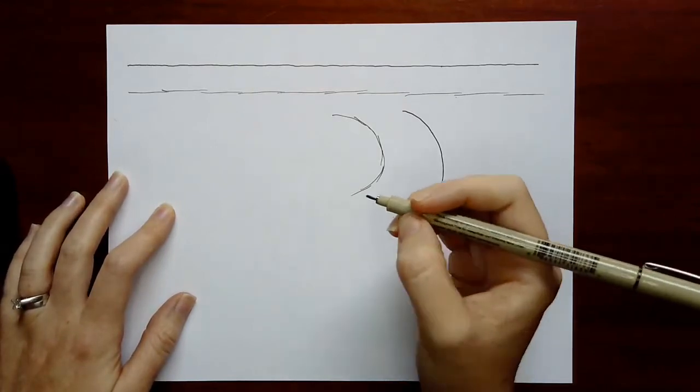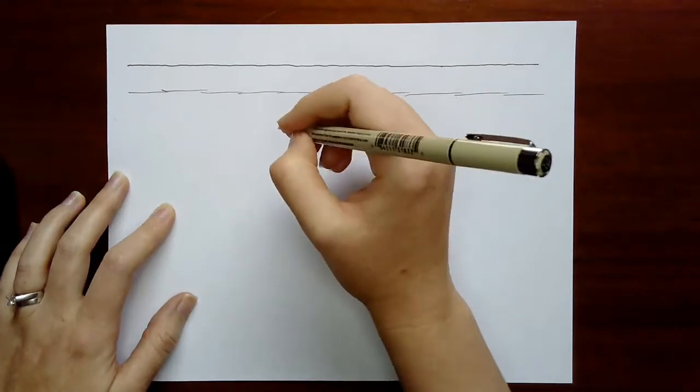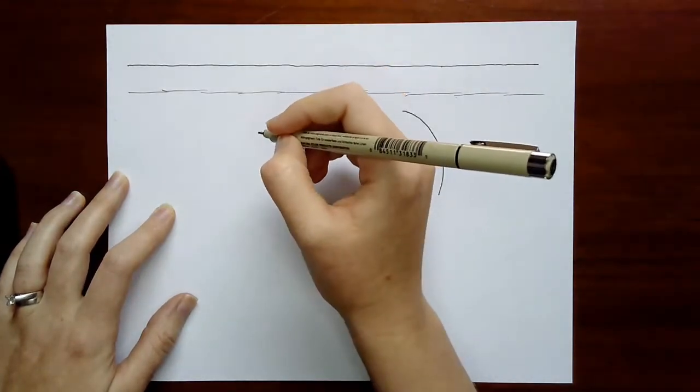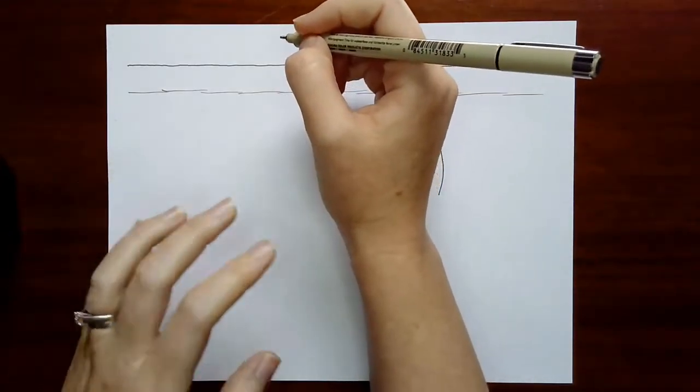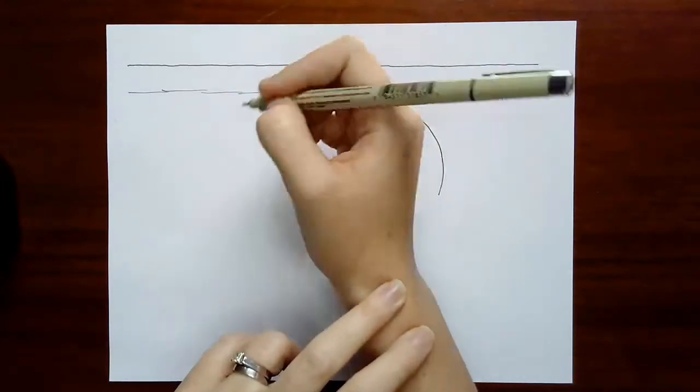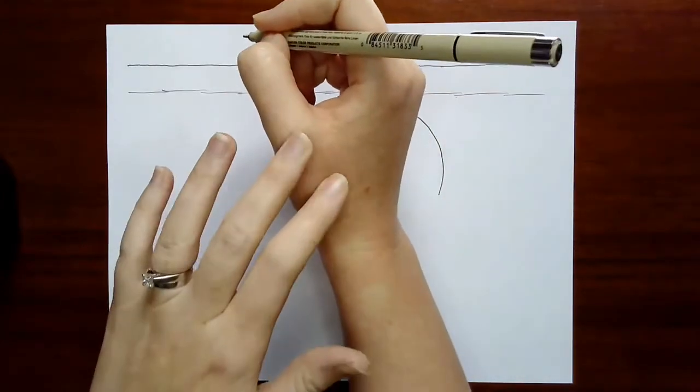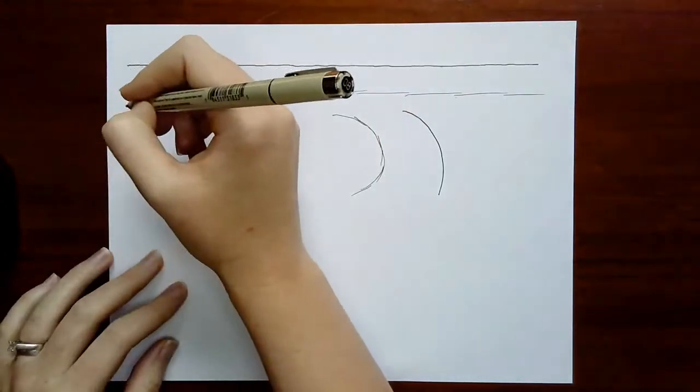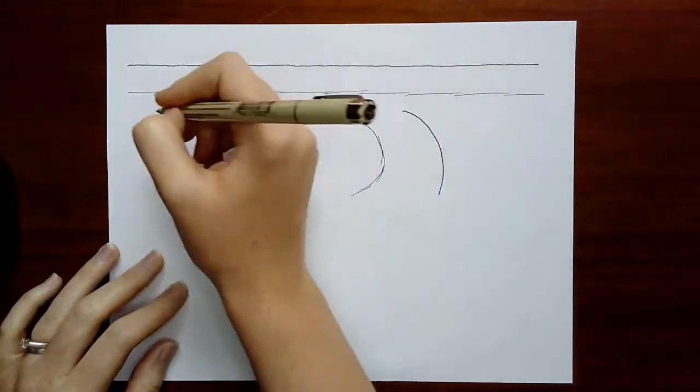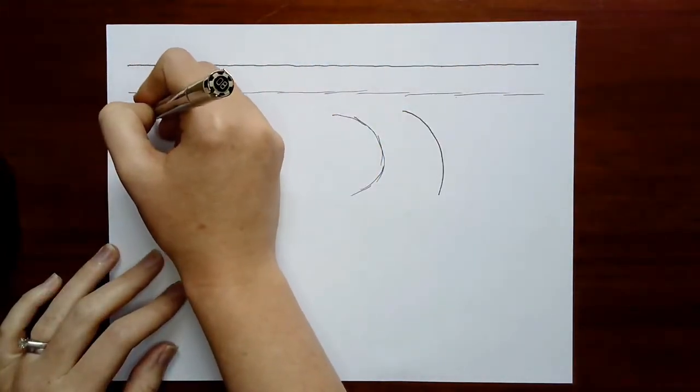One thing you can do is think about how you move your hand and your wrist and your arm together. So you may have noticed I don't really bend my wrist a lot when I'm making these lines. My hand and my arm sort of act as one, as a movement down the page, like this.